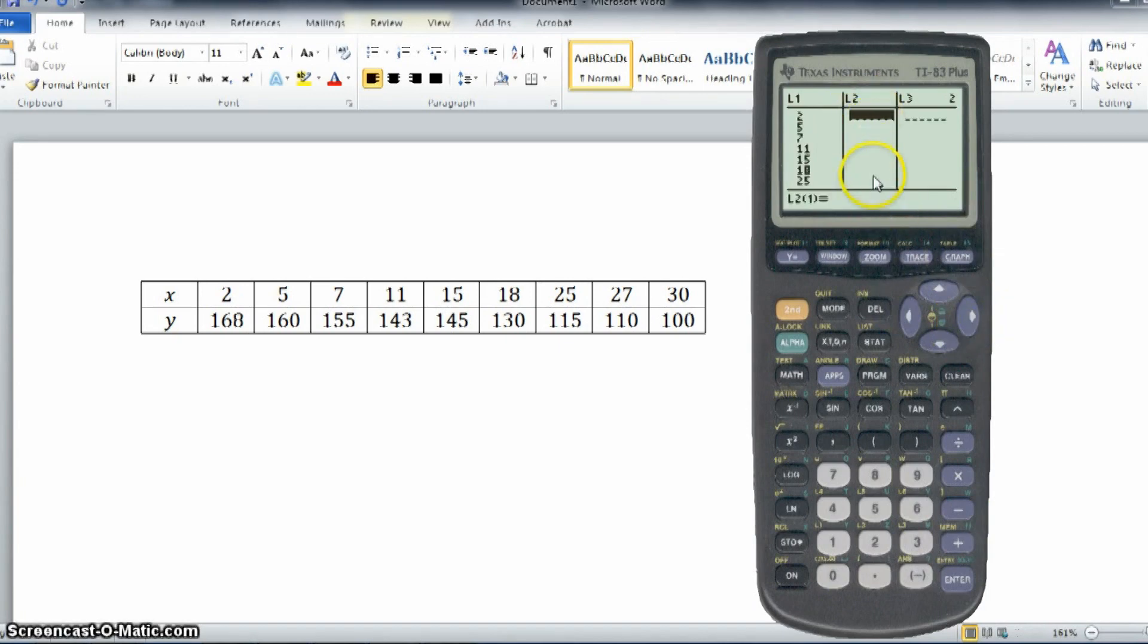We're going to input the second list into column two. So, we've got one sixty-eight, one fifty-five, one forty-three, one forty-five, one thirty, one fifteen, one ten, and one hundred.